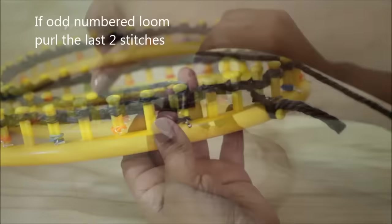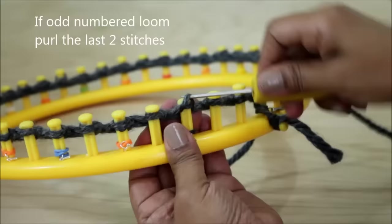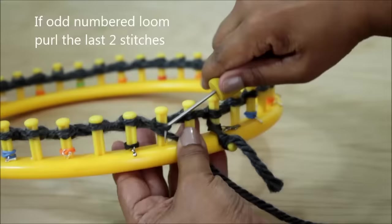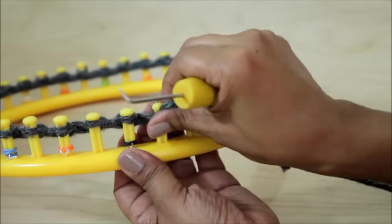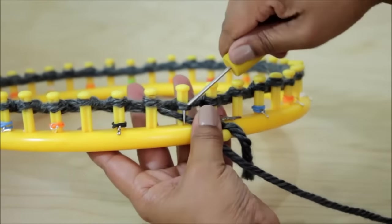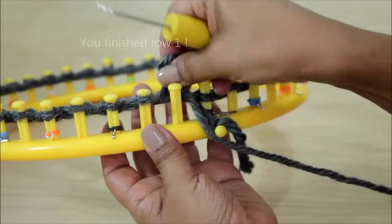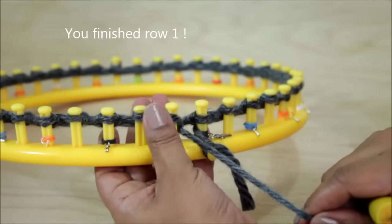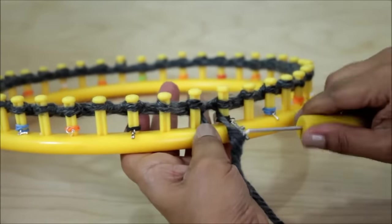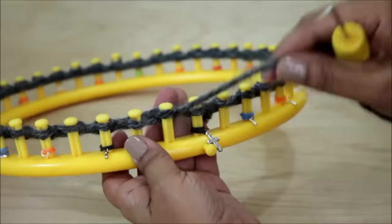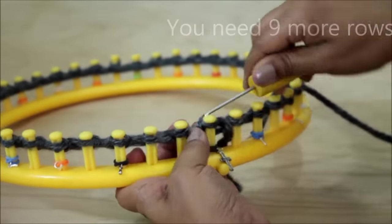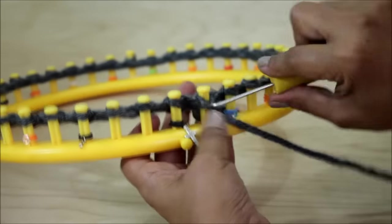If you have an odd number loom, then you're going to finish off with two purls. All right, you finished row one. Remember to remove the knot from the anchor peg and then you just need to do nine more rows. So here is row two and just keep knitting until you have ten rows.